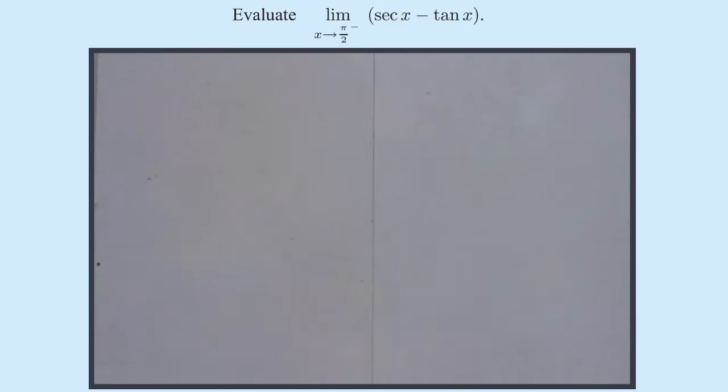Something like this. I'm going to rearrange this so I can get a quotient with the aim being potentially, if it's indeterminate, it may end up being L'Hôpital's rule.